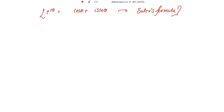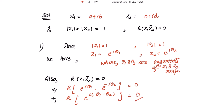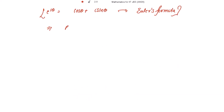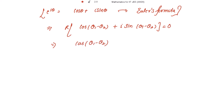Applying Euler's formula, this becomes real part of cos(theta 1 minus theta 2) plus iota sine(theta 1 minus theta 2) equal to 0. The real part is cos(theta 1 minus theta 2), so cos(theta 1 minus theta 2) equals 0. This implies theta 1 minus theta 2 is equal to pi by 2, or equivalently theta 1 equals theta 2 plus pi by 2.